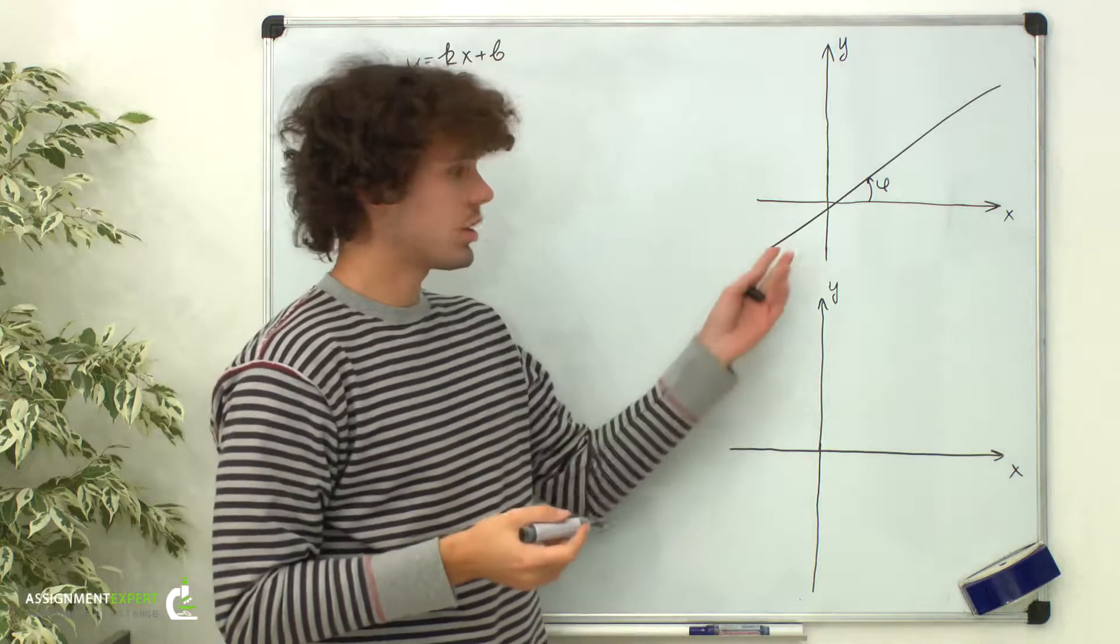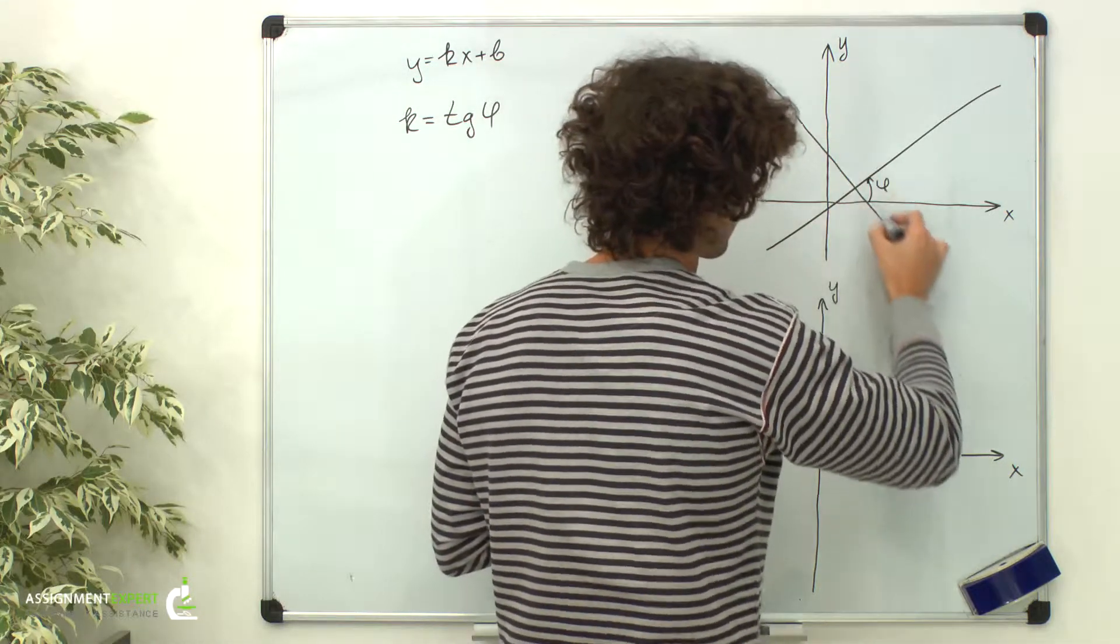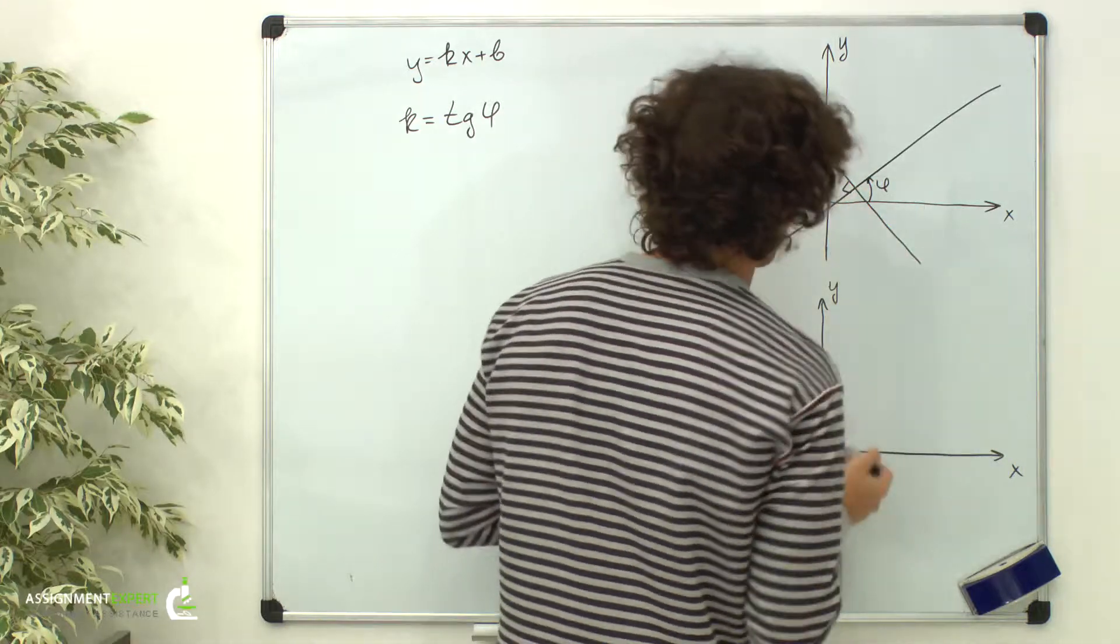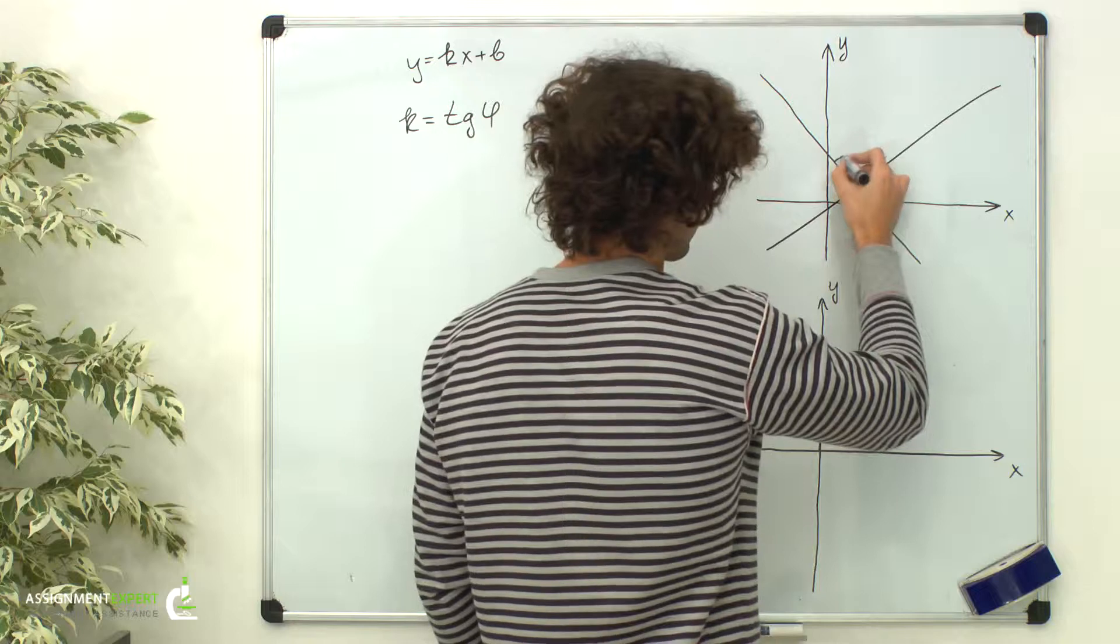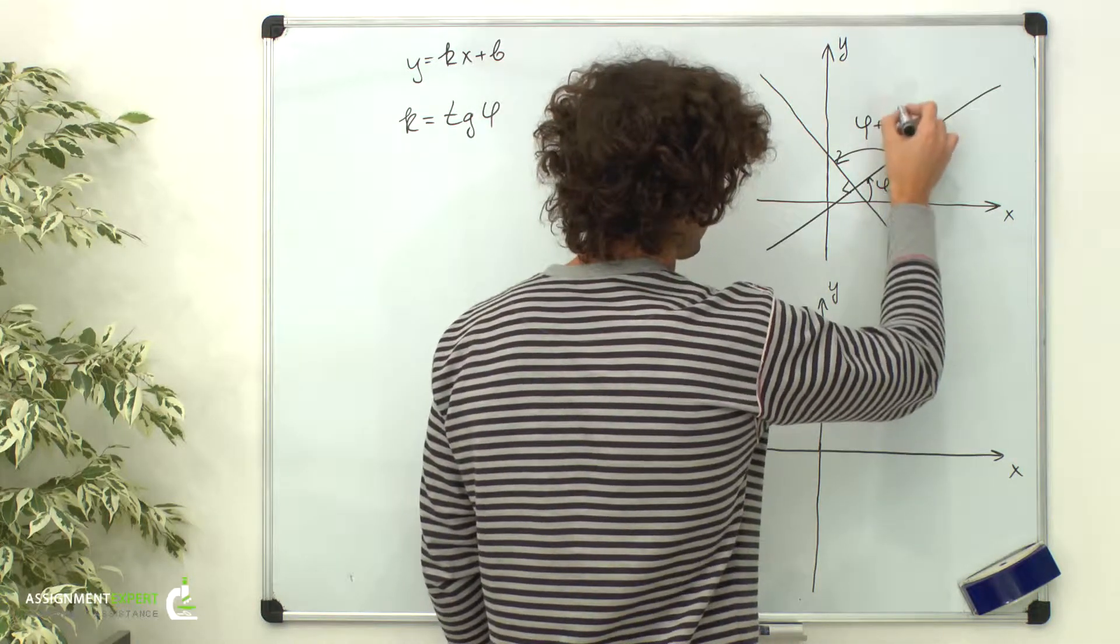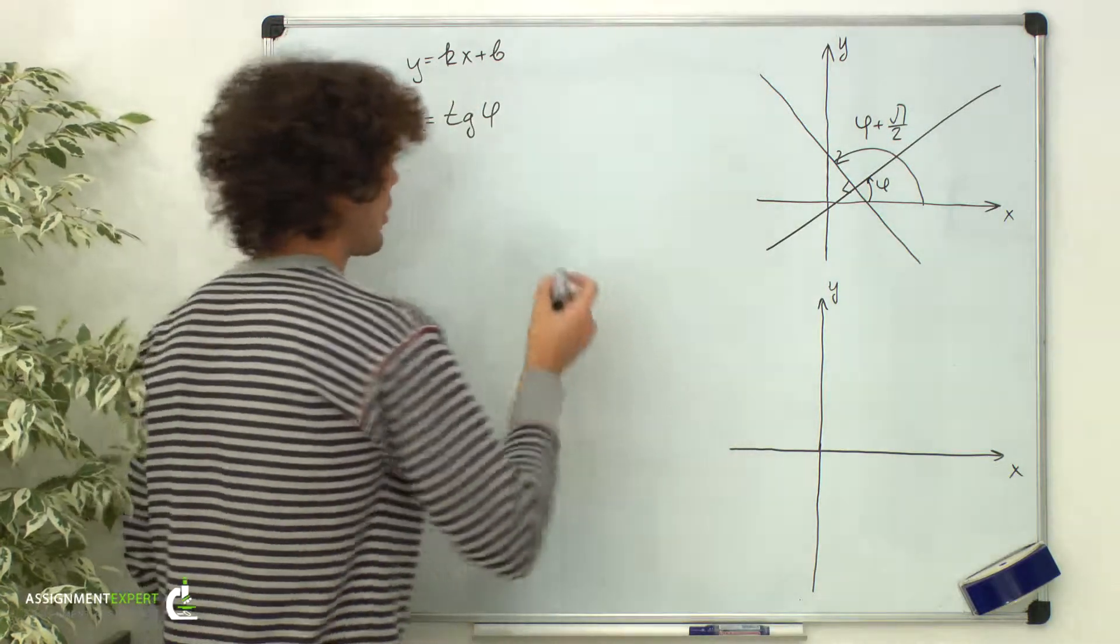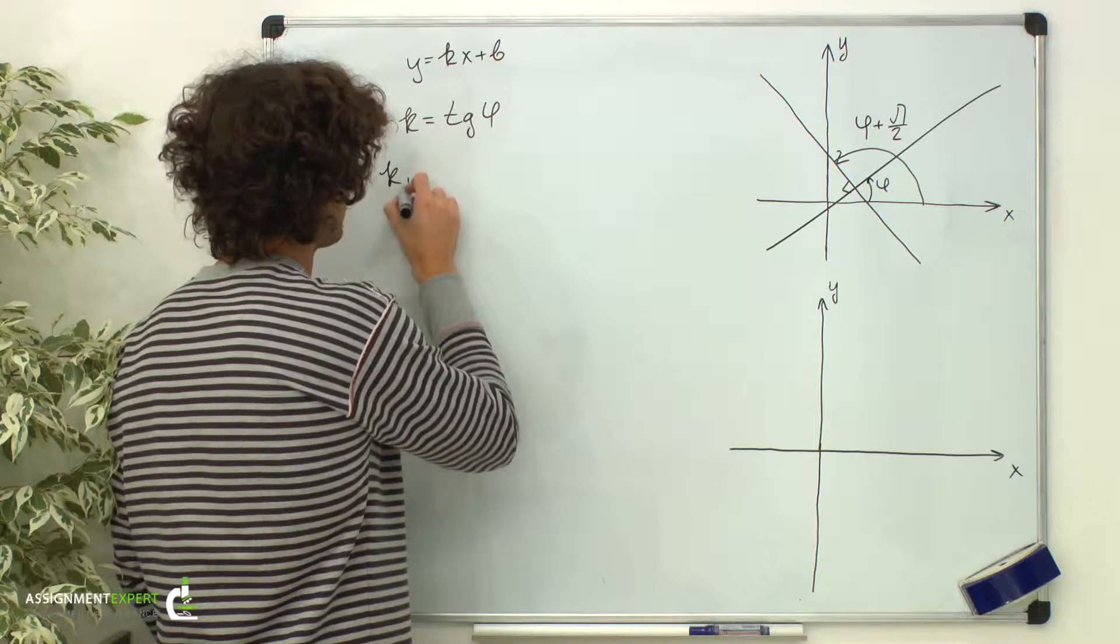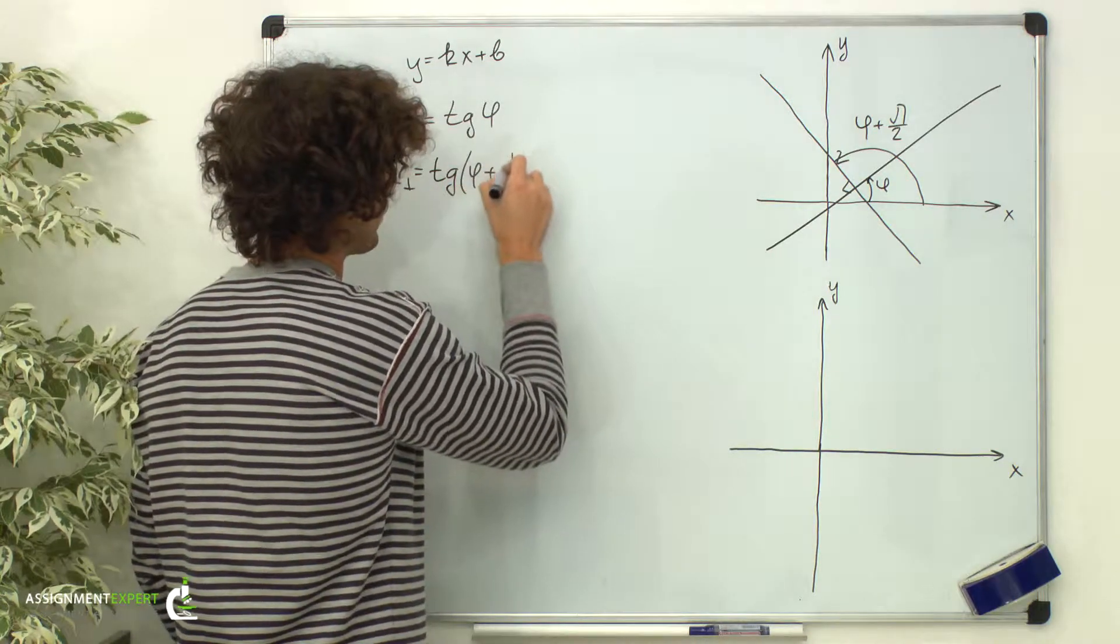Suppose we have another line perpendicular to that one. The angle between that line and the positive direction of x-axis over here equals phi plus pi over 2. So, the slope of the line perpendicular to the given equals tangent of phi plus pi over 2.